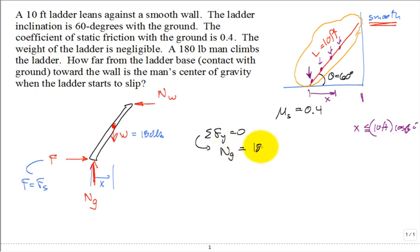Now what we do is we say the sum of the forces in the X equal to zero. That allows me to say that the normal at the wall is equal to the frictional force at the bottom of the surface with the ground of the ladder. And we just said at the point of slipping, that is F_s, which is mu sub s times N sub G.